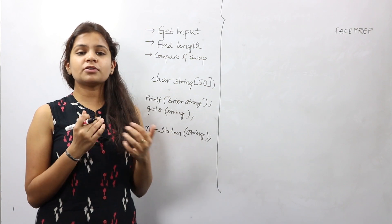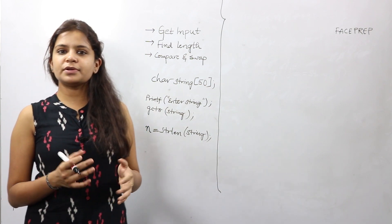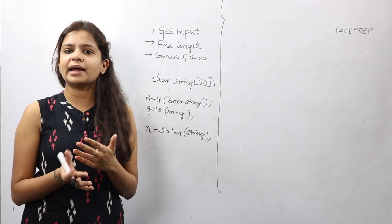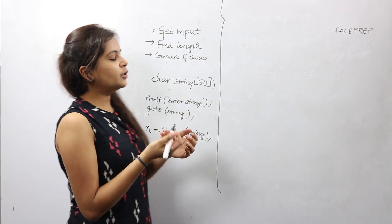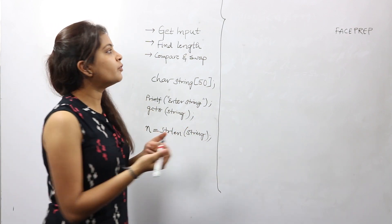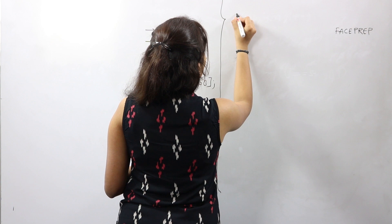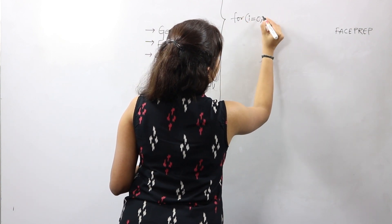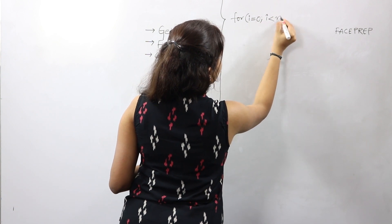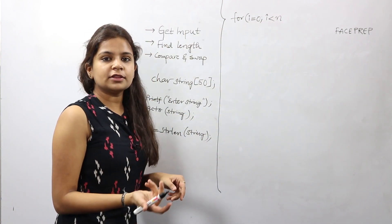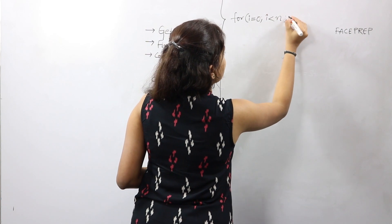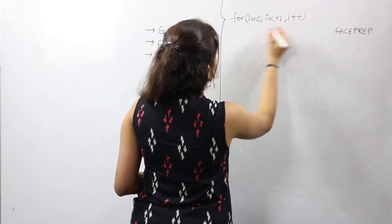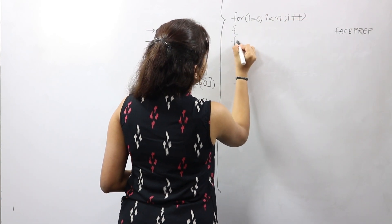The final step is to compare and swap the characters, for which we would be using two for loops: the i loop and the j loop. You guys will have to declare i and j before beginning. I would use a loop that starts from zero and it goes on till n because n is the length of the string, i++.